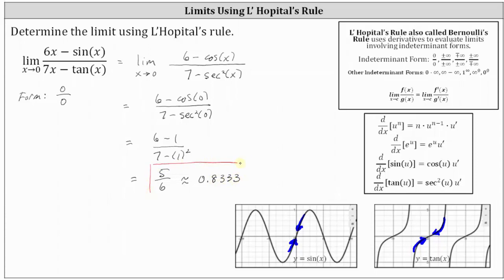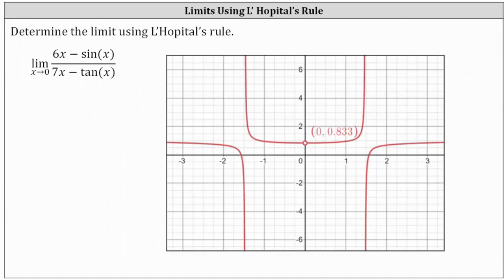Before we go, let's verify this limit graphically. Here we have the graph of the original function, y equals the quantity 6x minus sine x divided by the quantity 7x minus tangent x. Analyzing the graph, notice as we approach x equals zero from the right side and from the left, we can see we are approaching the y value or function value of approximately 0.833, which we already know from our work is the decimal approximation for the exact limit of 5/6. I hope you found this helpful.